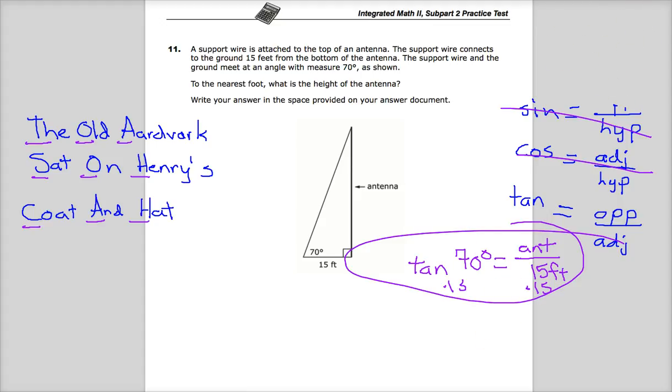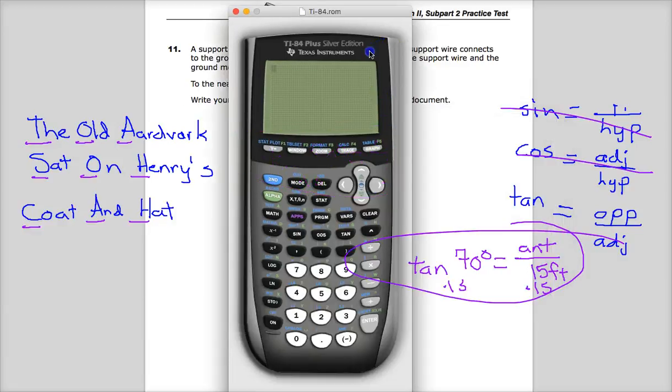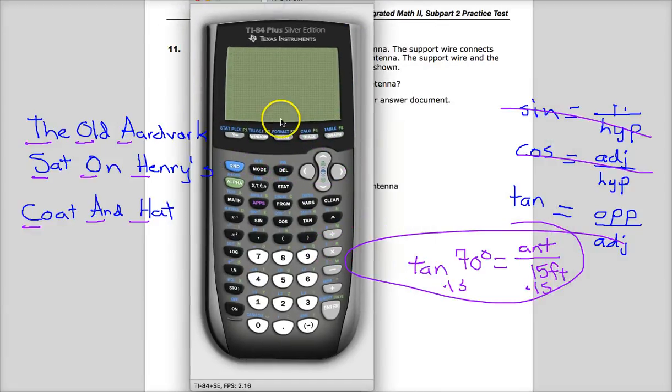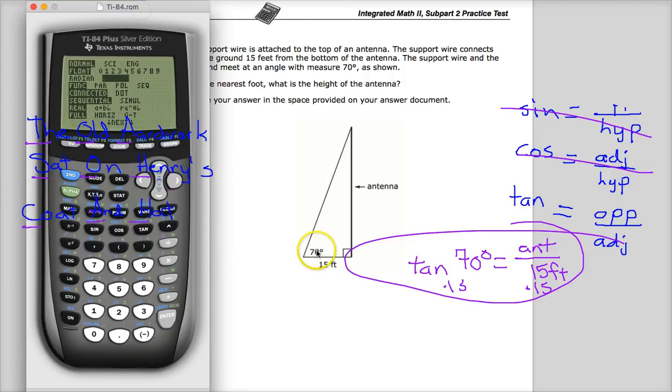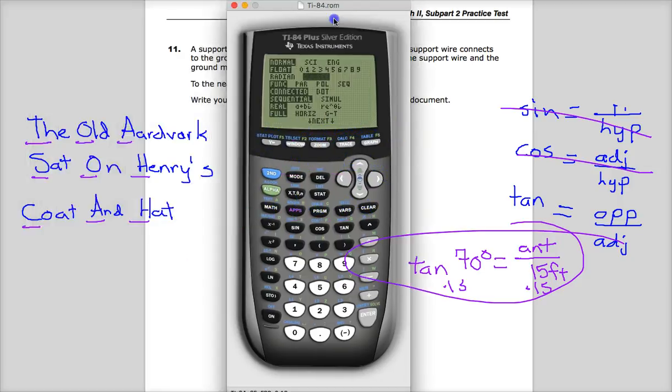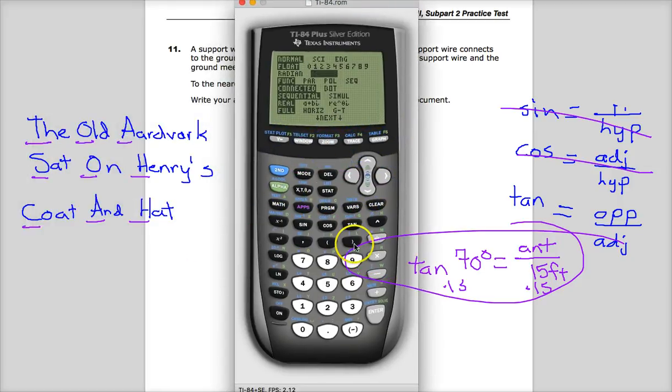So let's just do tangent 70 times 15. Now if you're using something like a TI-84 or any sort of graphing calculator or scientific calculator, make sure that before you do anything else you go into the mode and change it to degrees, because you'll get a really weird answer if you do radians and then it will be wrong. The question identifies itself as being in degrees by putting a degree sign there or saying 70 degrees. So you have to work in the correct mode.